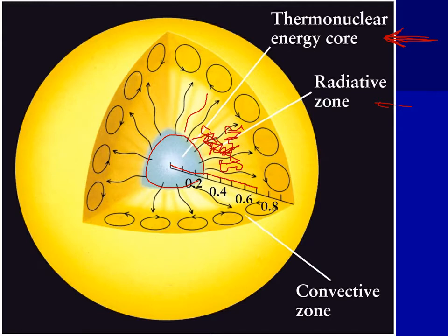Once the energy reaches the top of the radiative zone, it heats gas, which then expands, rises, cools off, and sinks. That is the convective zone. This allows us to pick out the major areas of the sun.